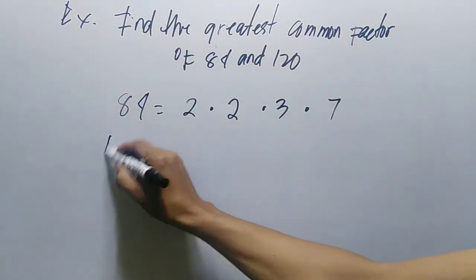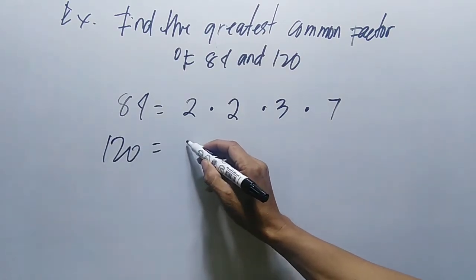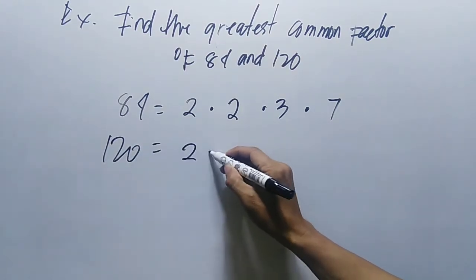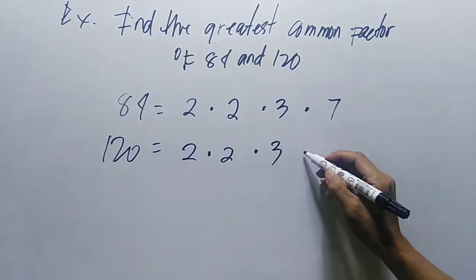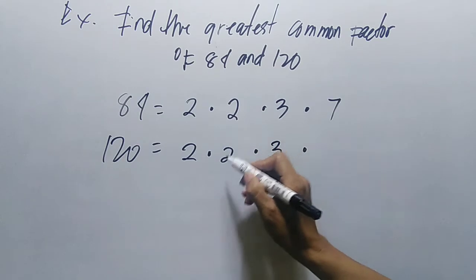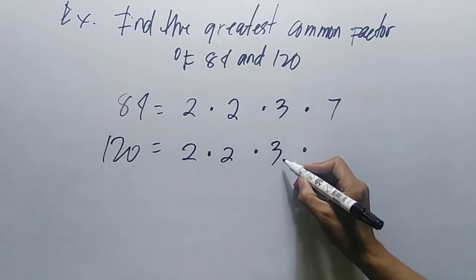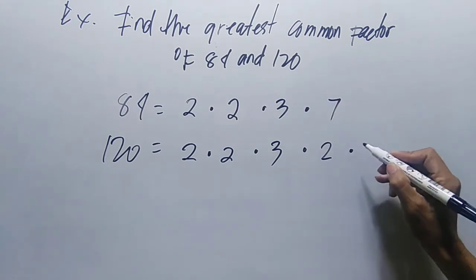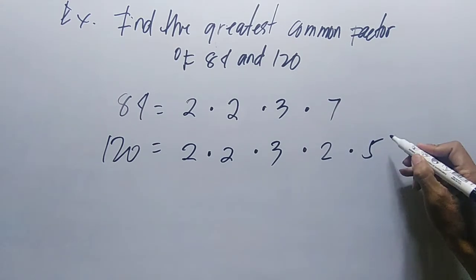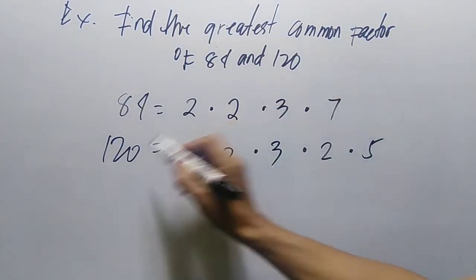For 120, we have 2 times 2 times 3 times 2 times 5. That's 2 times 2 equals 4, times 3 equals 12, times 2 equals 24, times 5 equals 120.